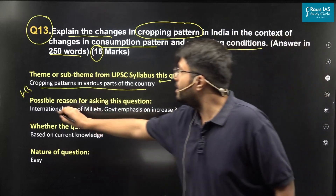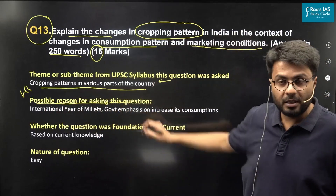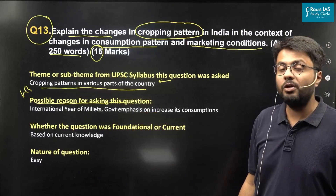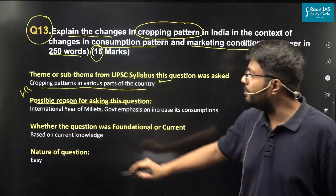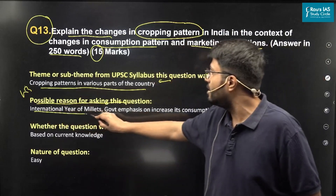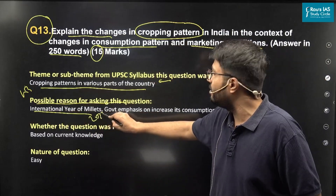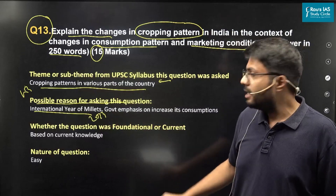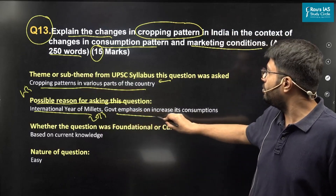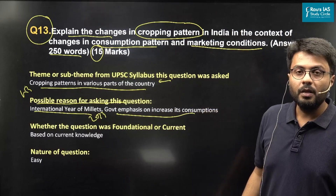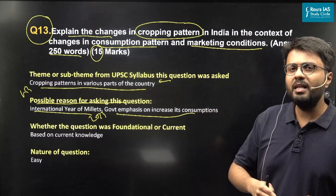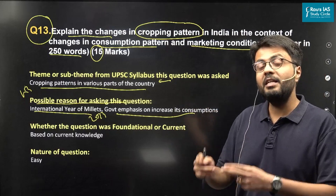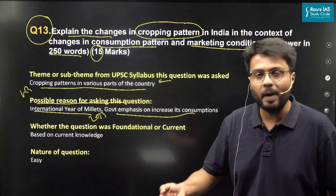What is the possible reason for UPSC to ask this question? As we know, the Food and Agriculture Organization is celebrating the International Year of Millets in 2023. The government of India is also promoting the consumption of millets, leading to increasing demand for millets in India, which signifies changes in cropping pattern in the country.